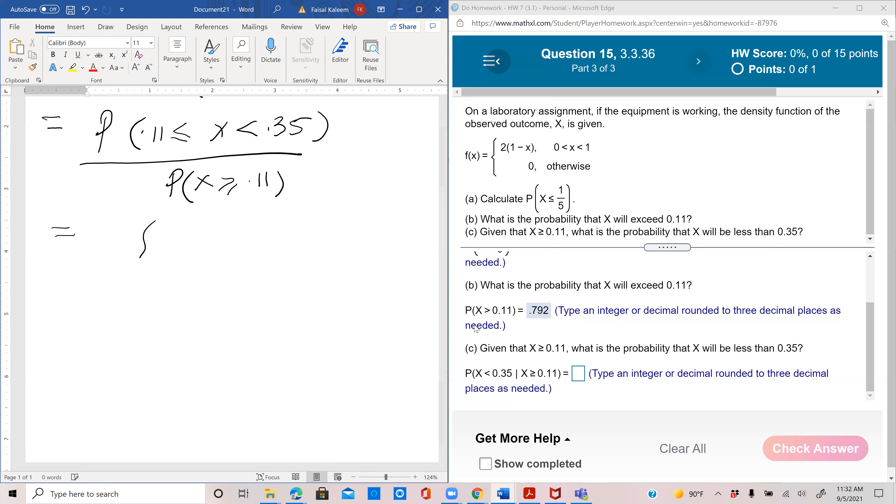So the top would be integral from 0.11 to 0.35, 2 times 1 minus x, and the bottom is already calculated as 0.7921. I'm just writing four decimal places.